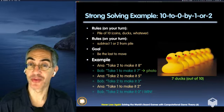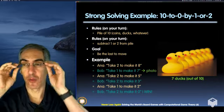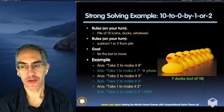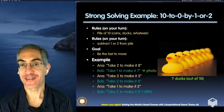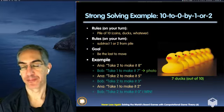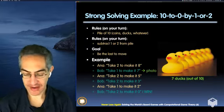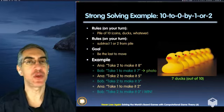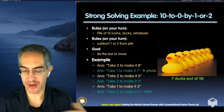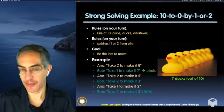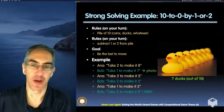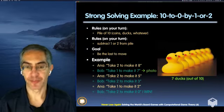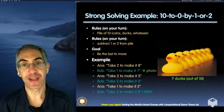The game is called '10 to 0 by 1 or 2.' You place 10 coins on the table. On your turn, you take either one or two coins and remove them from the table. The goal is to be the last to move.